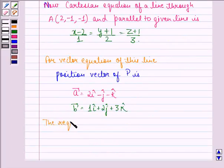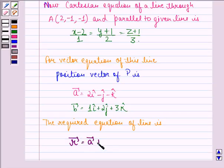The required equation of the line is vector R equals vector A plus lambda times vector B.